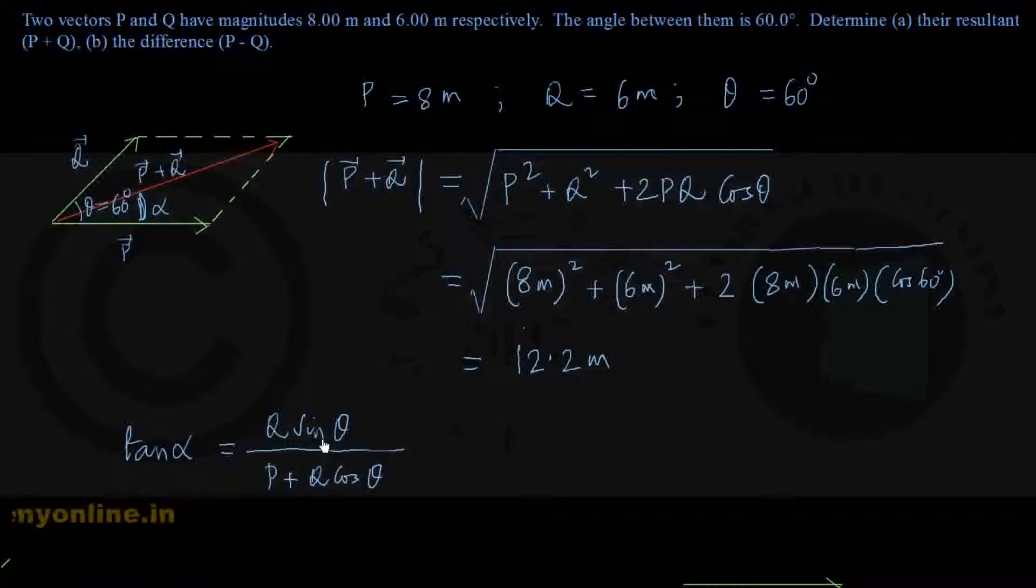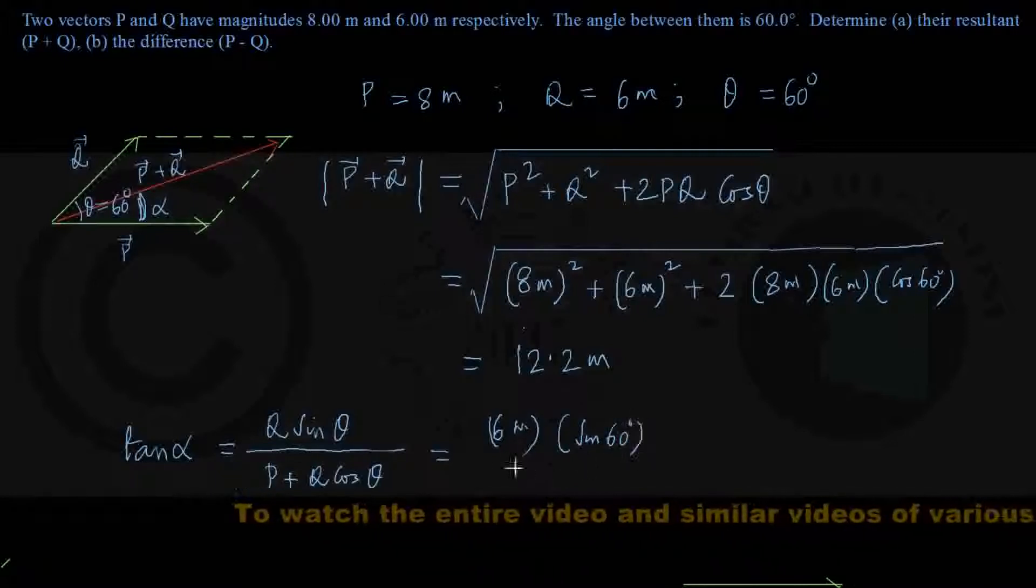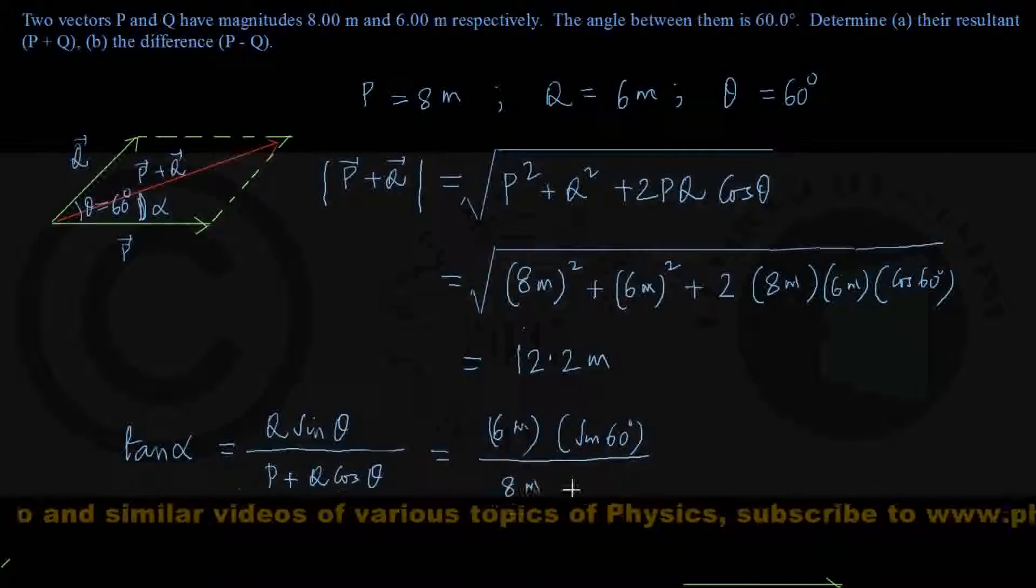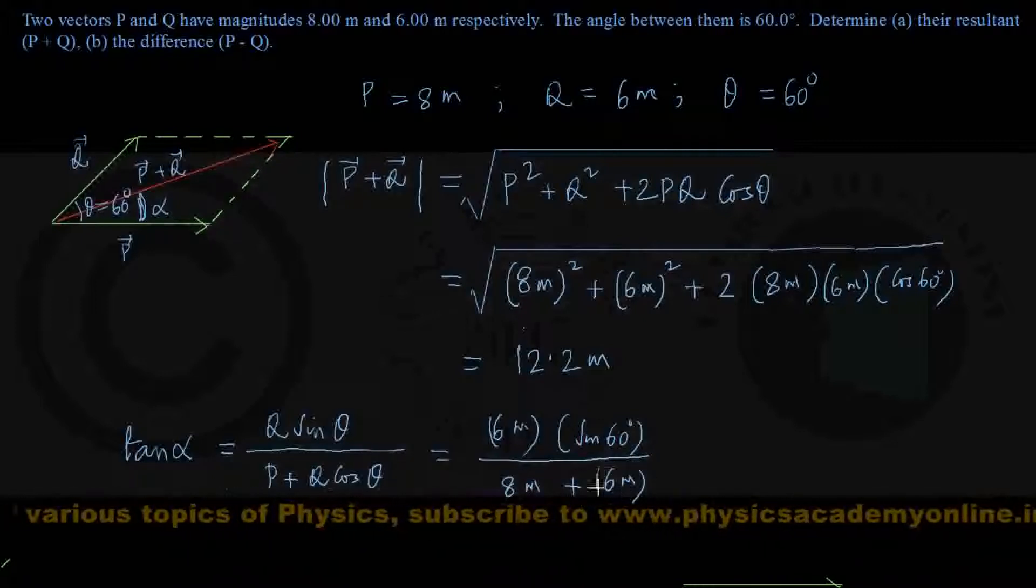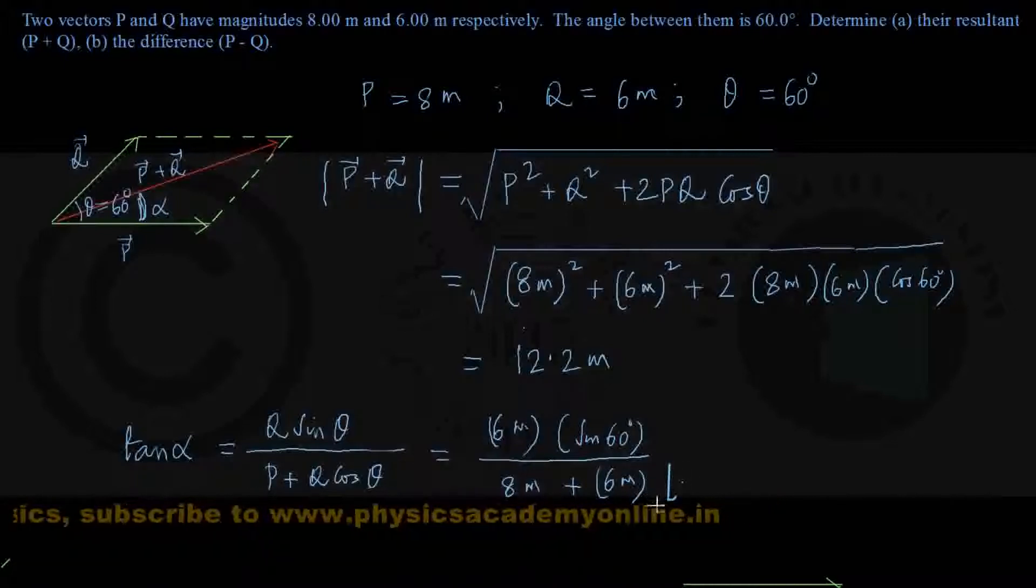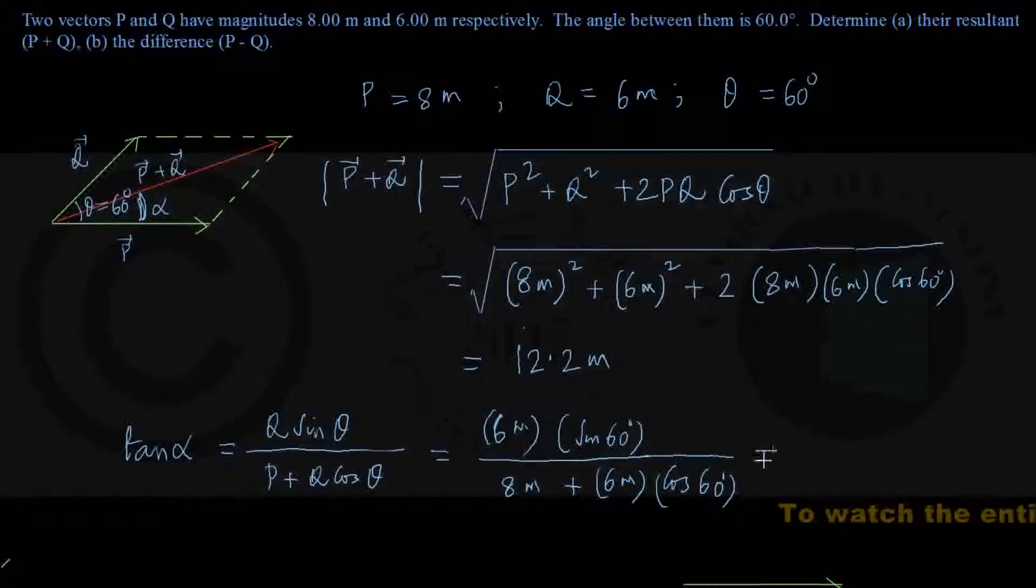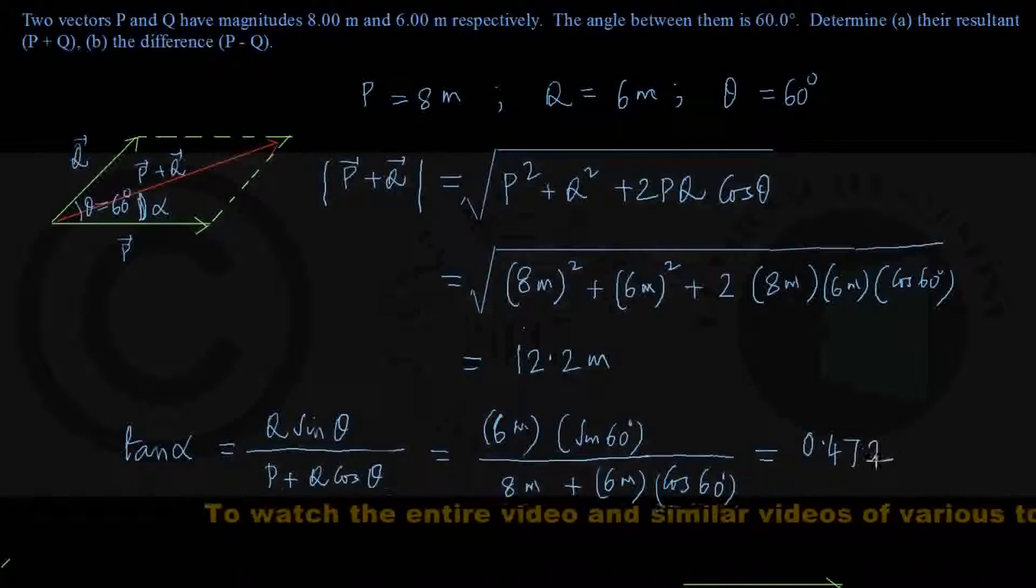Let me put in the values: Q is 6 meters, sine 60 degrees, divided by P which is 8 meters plus Q which is 6 meters times cosine 60 degrees. This gives the value of tan alpha. Do the calculation yourself—up to three significant figures, this value is 0.472. Verify this result.